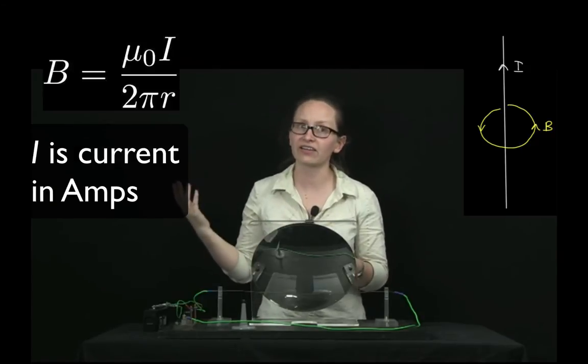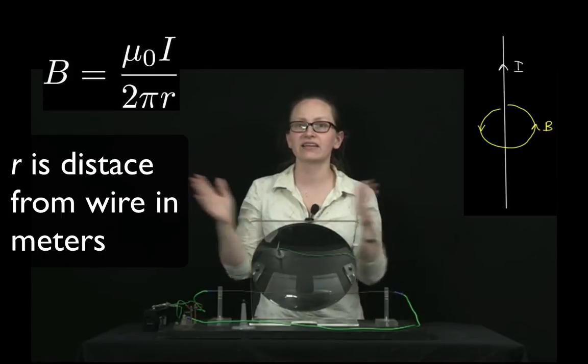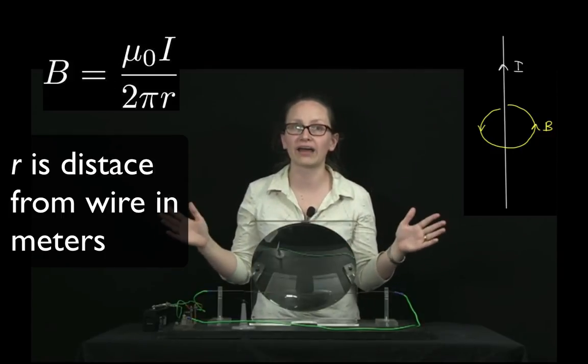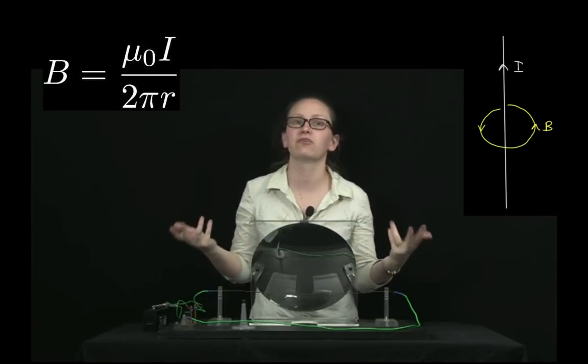I is the current in amps, 2π is just 2π, and r is our distance from the wire. So let's solve a problem using this formula now.